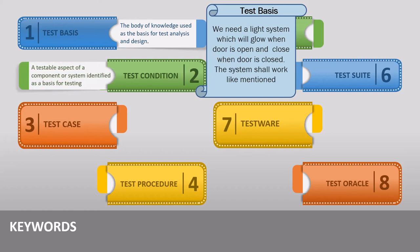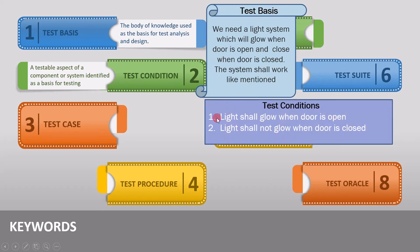Now let's see the second keyword: test condition. It is defined as a testable aspect of a component or system identified as a basis for testing. Referring to the same example, the testable aspects are: light shall glow when the door is open, and the light shall not glow when the door is closed. After reading the test basis, we get these as testable conditions. So in simple terms, test conditions are testable requirements obtained from the test basis.